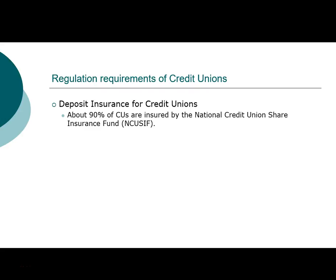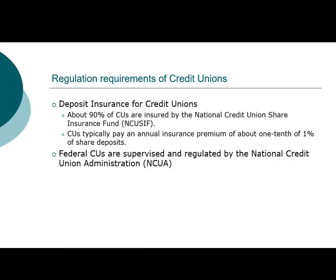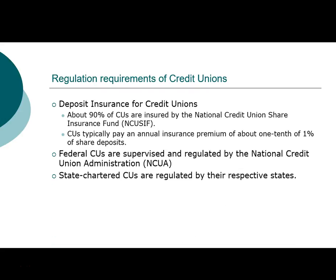Credit unions, unlike savings institutions and banks, are insured by a different organization. About 90% of credit unions are insured by the National Credit Union Share Insurance Fund — not the FDIC. Credit unions are not deposit institutions so they are not insured by the FDIC. Credit unions typically pay an annual insurance premium, and in case of default the NCUA will reimburse the depositors. Federal credit unions are regulated by the Federal Credit Union Administration, and state-chartered credit unions are regulated by each state's own agency.